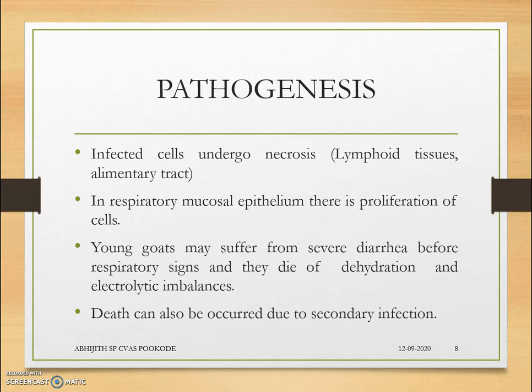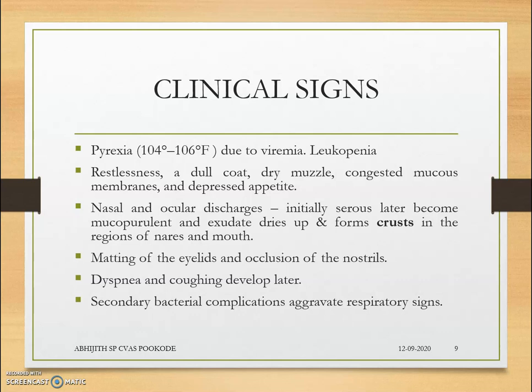In the alimentary tract, cell necrosis leads to diarrhea and dysentery. In the respiratory mucosal epithelium, there is proliferation of cells. Young goats may suffer from severe diarrhea before respiratory lesions appear and may die of dehydration. Severe diarrhea causes drastic electrolytic imbalance leading to hypovolemic shock, and secondary bacterial infection can cause pneumonia.